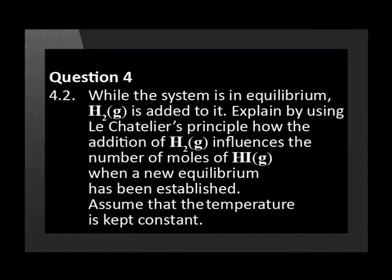While the system is in equilibrium, hydrogen gas is added to it. Explain, by using Le Chatelier's principle, how the addition of hydrogen gas influences the number of moles of hydrogen iodide when a new equilibrium has been established. Assume that the temperature is kept constant.